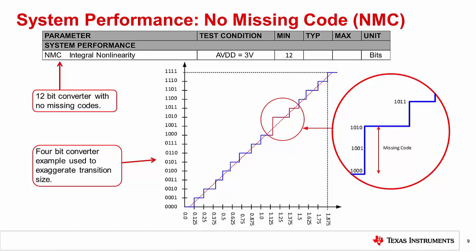In fact, data sheets often provide a no missing code, or NMC, specification to highlight that the converter will not have missing codes. The excerpt above shows an example of the no missing code specification.